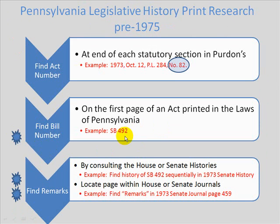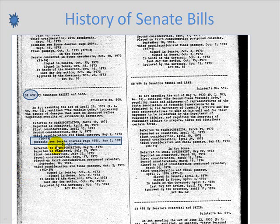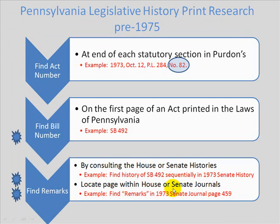Then finally, my third step: I will take my Senate bill number and find the remarks in the House or Senate journal. So I will initially consult the House or Senate histories for 1973 and locate Senate Bill 492, which is listed sequentially. I will scan the histories and I will see a mention of remarks in the Senate journal on page 459 in 1973.